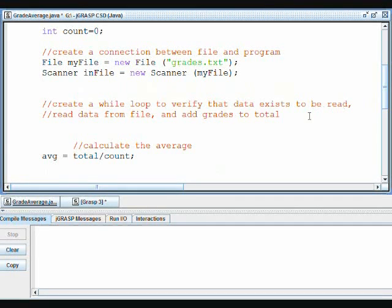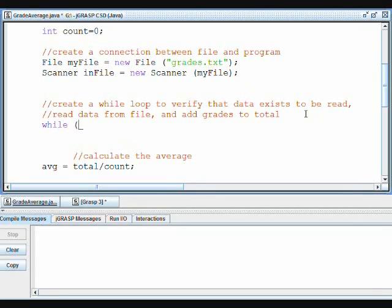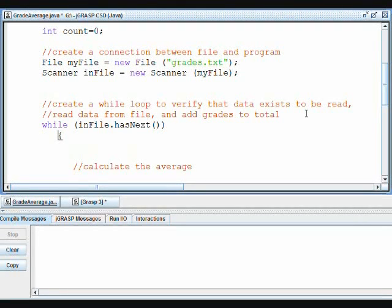Now we need to create a while loop. This will verify that there is data left in the file to be read. It will also read all of the data from the file as long as there is more data. So with the scanner class, we use the method .hasNext, which we can't use with any other class. Then we'll use the variable to say that grade is equal to inFile, because that was our scanner method, .nextDouble, because we want to read in a double as the grade.